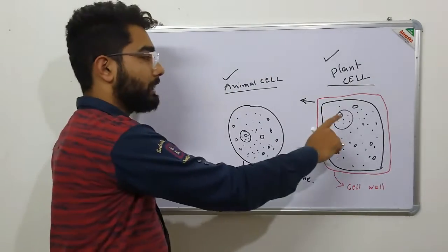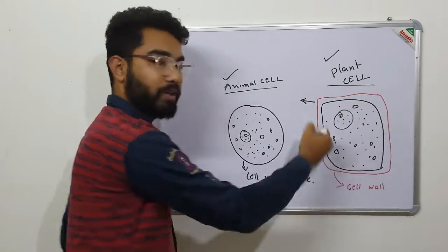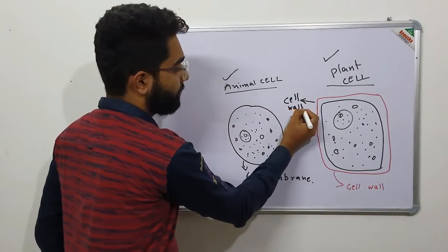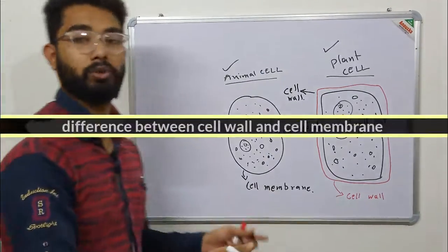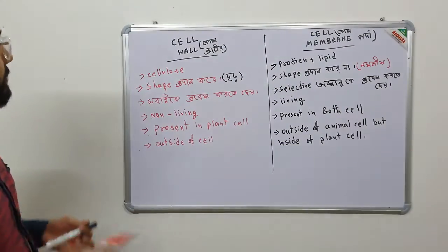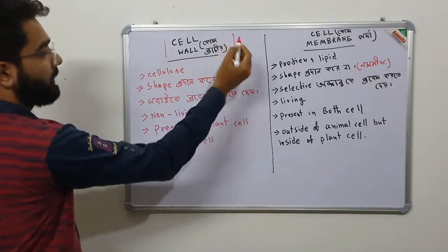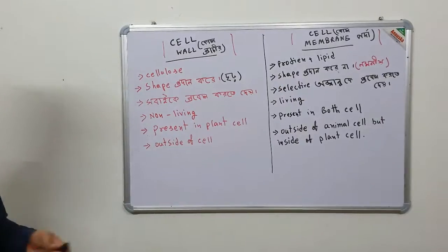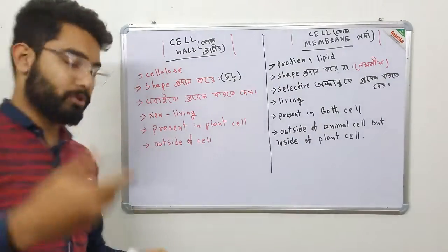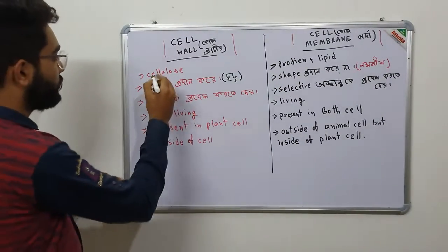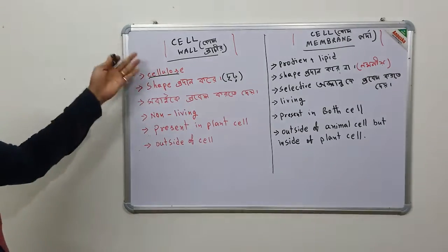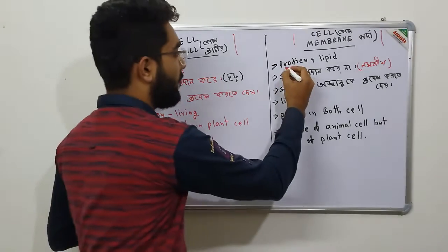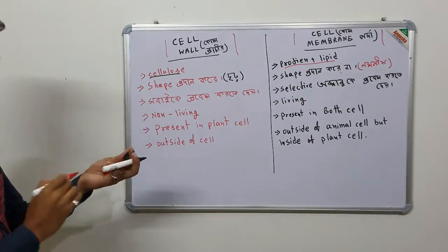The cell wall is made of cellulose, but the cell membrane is made of protein or lipid.